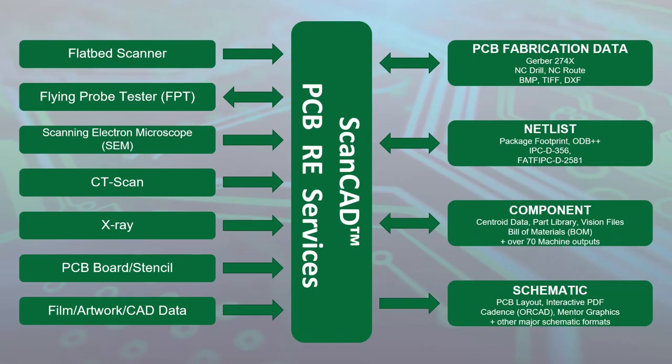Lastly on this screen, here's a quick review of all of our inputs and outputs that we use with our service bureau. On the left, you can see that we use our flatbed scanner. We can use images from a scanning electron microscope, images captured with CT or x-ray imaging methods, as well as other sources like films or data sheets. We can even take CAD inputs and use our software to export the schematic, netlist, bill of material, and pick-and-place data. On the right-hand side, we have all of our outputs grouped into four main segments: PCB fab data, netlist, component information, and schematic.